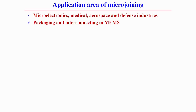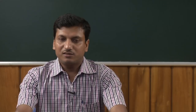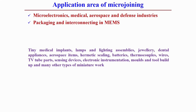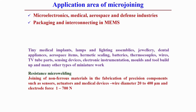Let us look at the typical application areas of micro joining processes. Mostly microelectronics, medical, aerospace, and defense industries have many applications of different micro joining technologies. Packaging and other interconnects in MEMS — micro electro mechanical systems — generally use micro joining. Other applications include medical implants, lamps and lighting assembly, jewellery industry, dental applications, aerospace, batteries, thermocouples, wires, TV parts, sensing devices, electronic instrumentation, and many other small components that need to be joined.